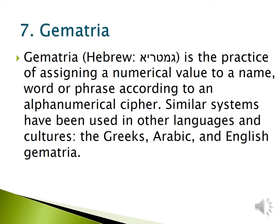Gematria — it came from a Hebrew word. Gematria is the practice of assigning a numerical value to a name, word, or phrase according to an alphabetical cipher. Similar systems have been used in other languages and cultures; Greek, Arabic, and English Gematria also exist.